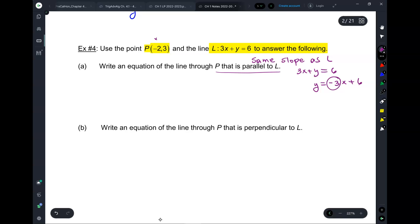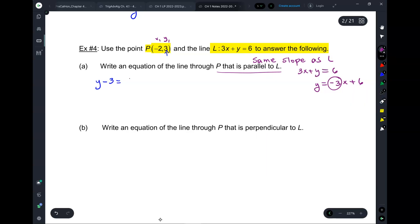So, now, x1, y1 here, yep. So, let's write an equation. y minus y1, which is 3, equals m, negative 3, x plus 2.